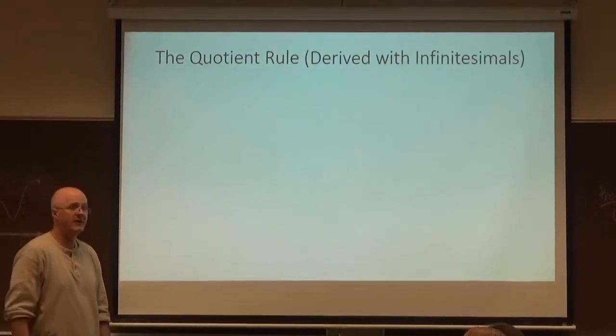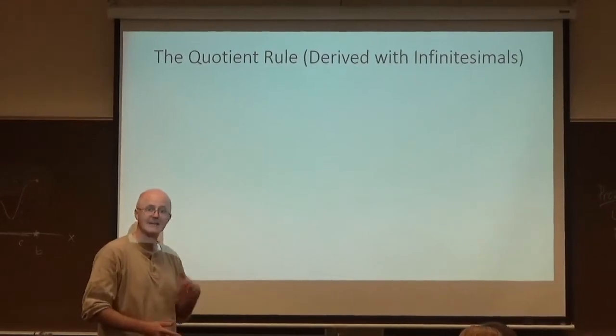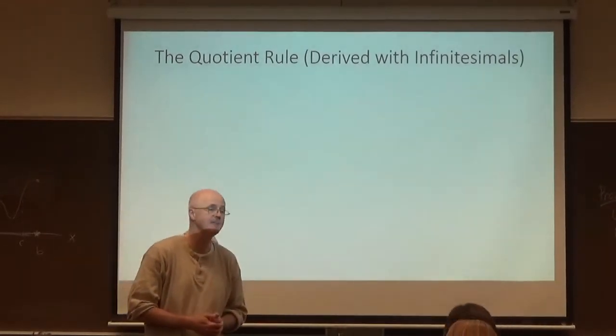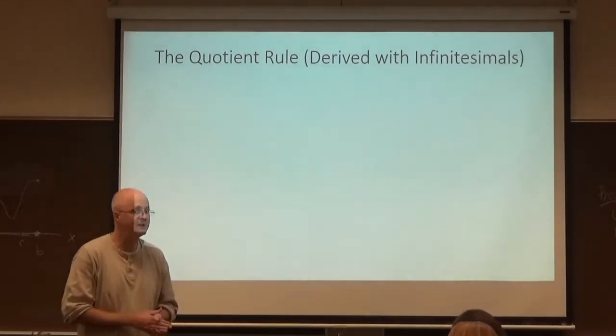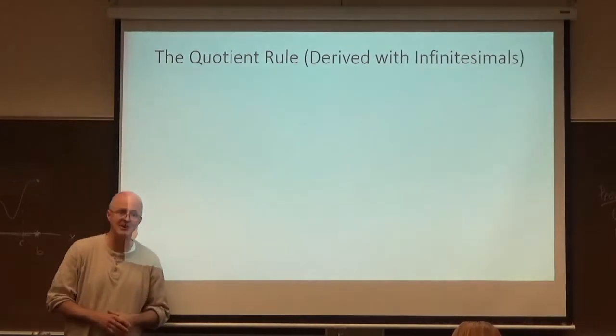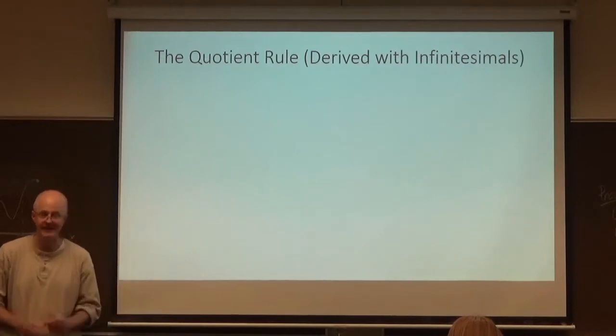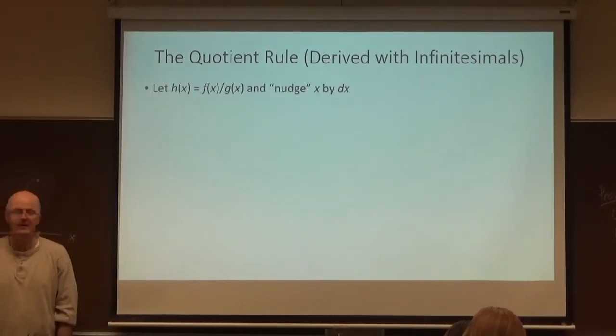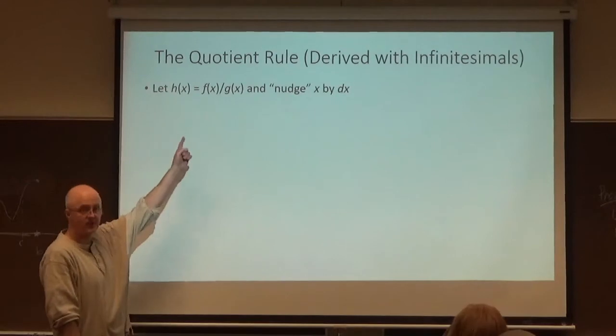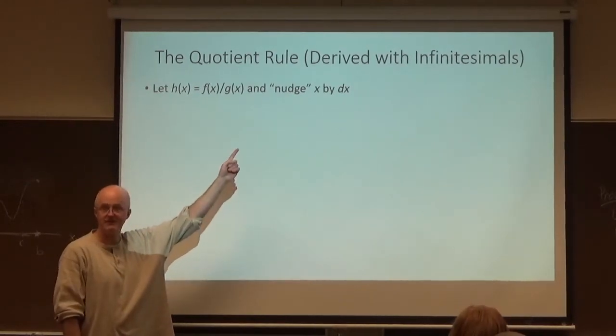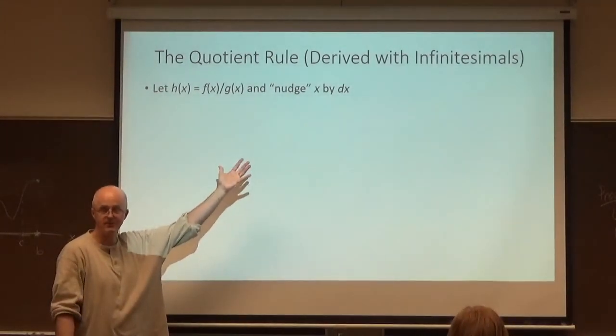Let's quickly go over the derivation of the quotient rule with infinitesimals. I did briefly show you this on Monday. I'm going to be pretty brief again. You probably do not want to write this all down. It's probably more beneficial for you to just look and think with me here. h of x is a quotient, f of x divided by g of x. Quotient means fraction.